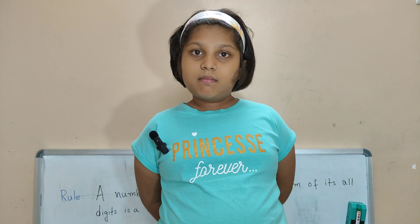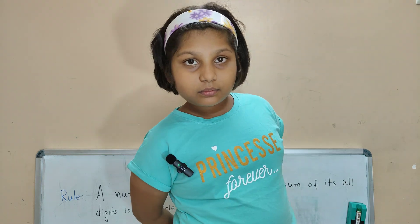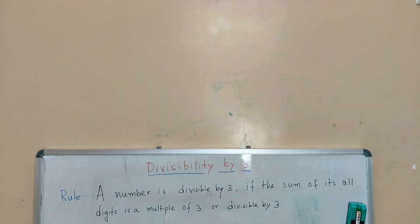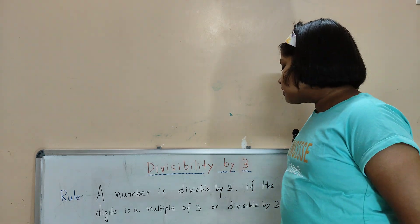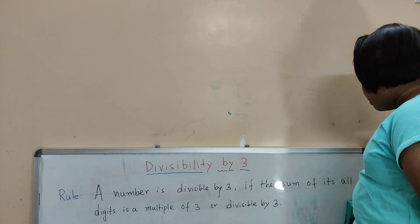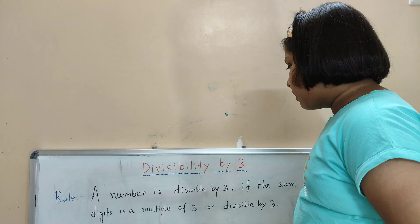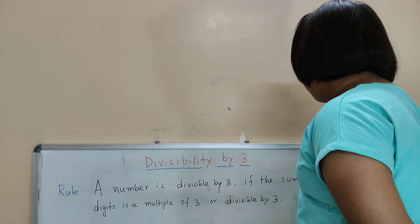So what is divisibility by 3? A number is divisible by 3 if the sum of its all digits is a multiple of 3 or divisible by 3. I have written the definition on the board. Read the sentence: a number is divisible by 3 if the sum of its all digits is a multiple of 3 or divisible by 3.